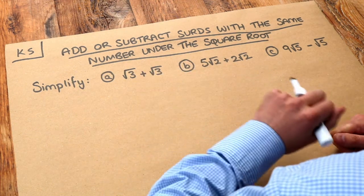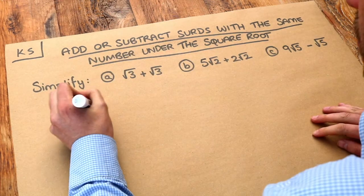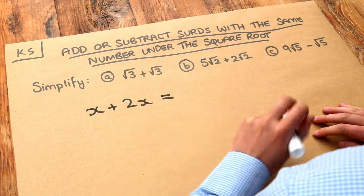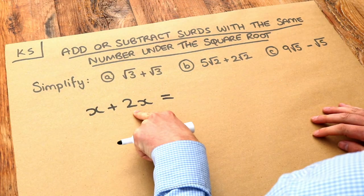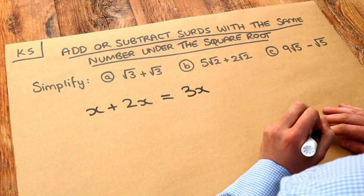Now to work out how to do these, I like to think about how we collect like terms in algebra. So for example, if I had x plus 2x, you could think of that as x plus two lots of x, and you'd say well that's three lots of x, so we get 3x. And the same is true